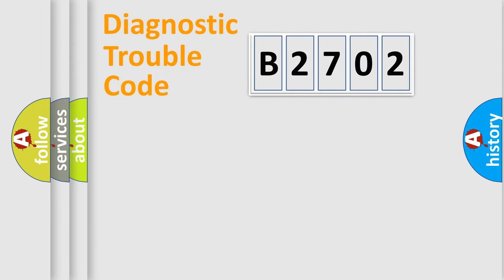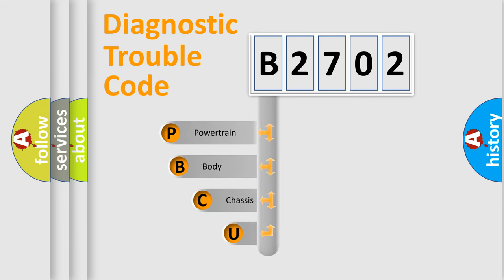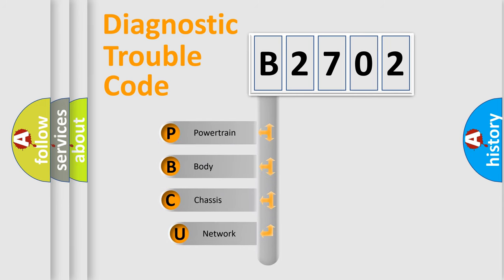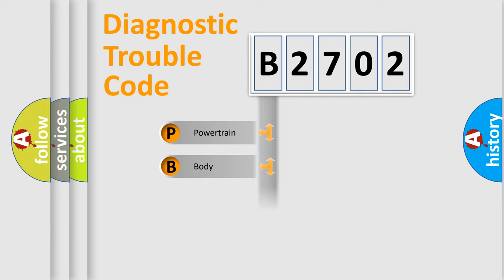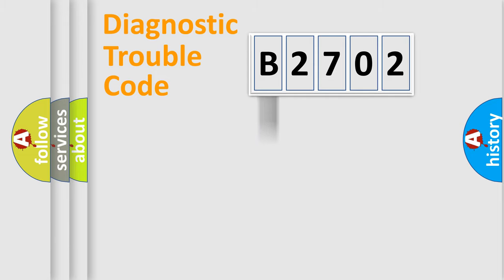Let's do this. First, let's look at the history of diagnostic fault code composition according to the OBD2 protocol, which is unified for all automakers since 2000. We divide the electric system of the automobile into four basic units: Powertrain, Body, Chassis, and Network.